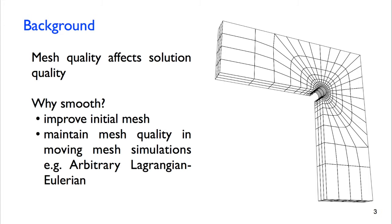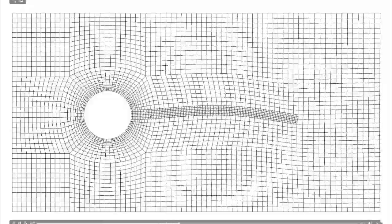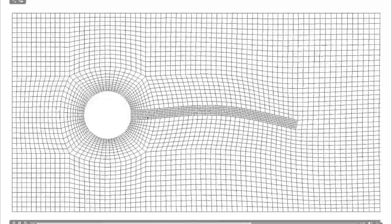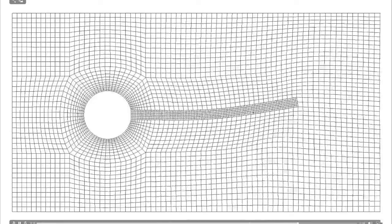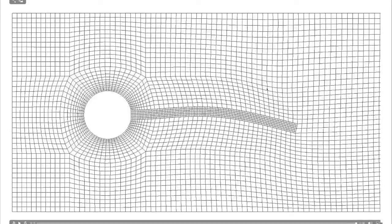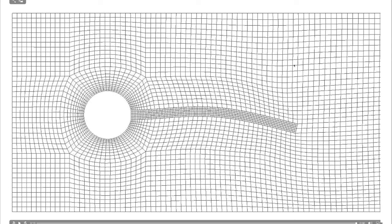The second reason we might want a mesh smoother is to maintain the mesh quality during moving mesh simulations, for example ALE or arbitrary Lagrangian Eulerian. In this video it shows the Hron-Turek FSI fluid solid interaction test case. We have a solid cantilever beam, so that's fully Lagrangian. It doesn't need a mesh motion solver. But the fluid mesh here has to move and be smoothed to accommodate for the moving boundary of the solid interface.